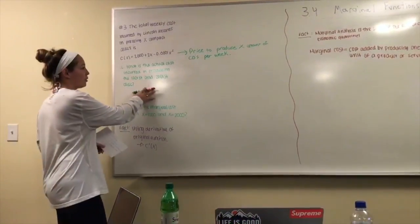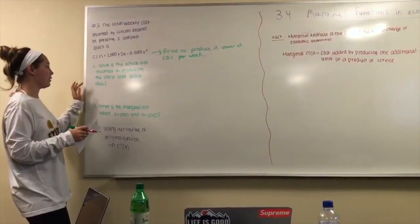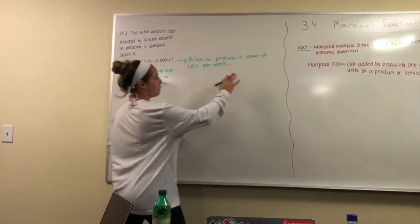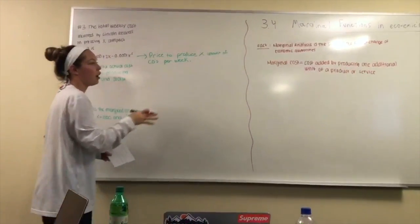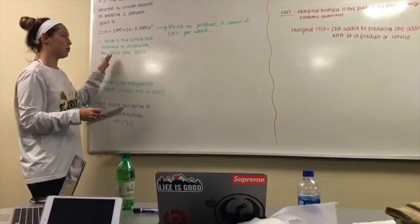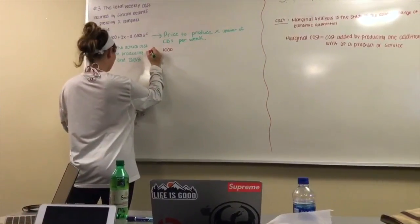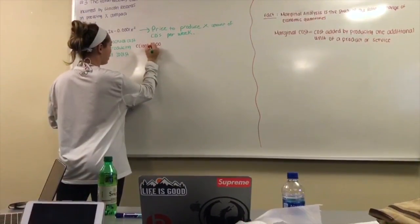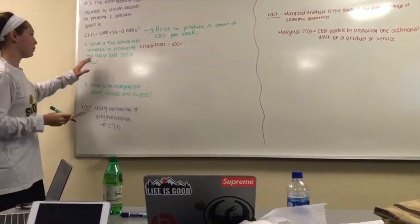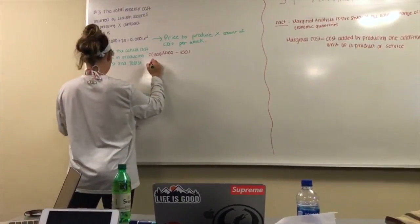So the first question that we're going to be looking at, which is part of a marginal cost question, is what is the actual cost incurred in producing the 1,001st and 2,001st disc. So when you're looking at this problem you need to think of it as what we explained over here, which is saying that marginal cost is cost added by producing one additional unit of a product or service. So since we have 1,001 discs being produced, we're going to base it off of 1,000. So your equation is going to be C(1,001) minus C(1,000). So basically what that is saying is we are going to be plugging in the numbers that we know into this equation.